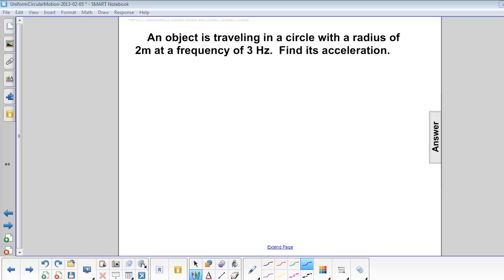An object is traveling in a circle with a radius of 2 meters at a frequency of 3 hertz. Find its acceleration.